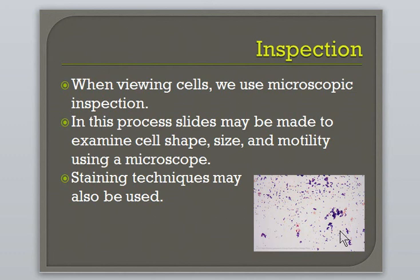This specimen has been prepared using a gram staining technique. As you can see, we have two distinct bacteria — one which is spherical in shape and stains purple, and the other which is rod-shaped and stains pink. One can use this information to help determine if the sample needs to be further isolated, as well as learn more about the identity of the two bacteria.